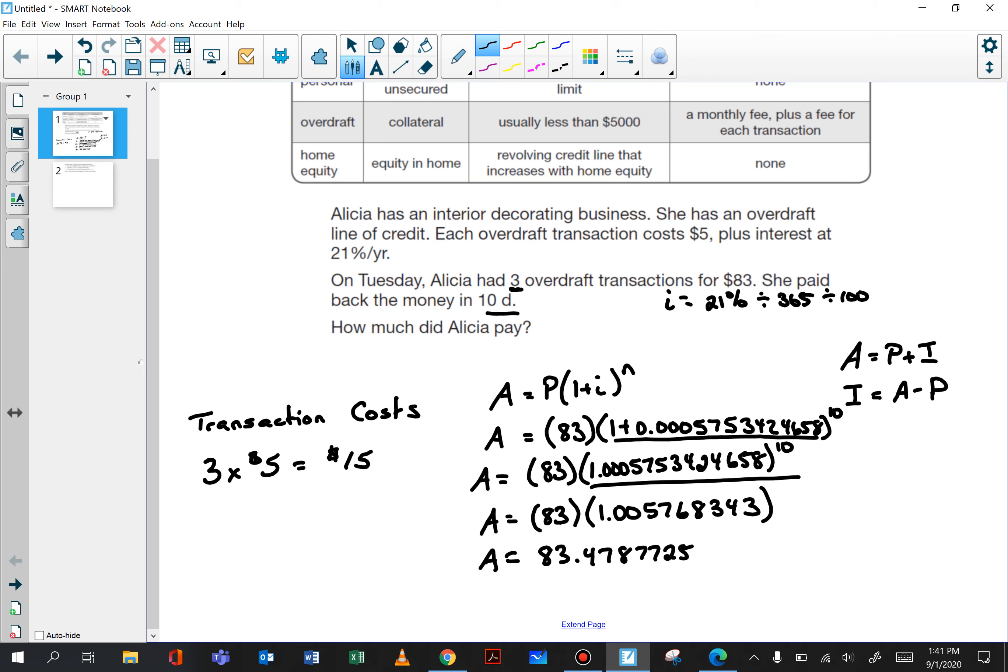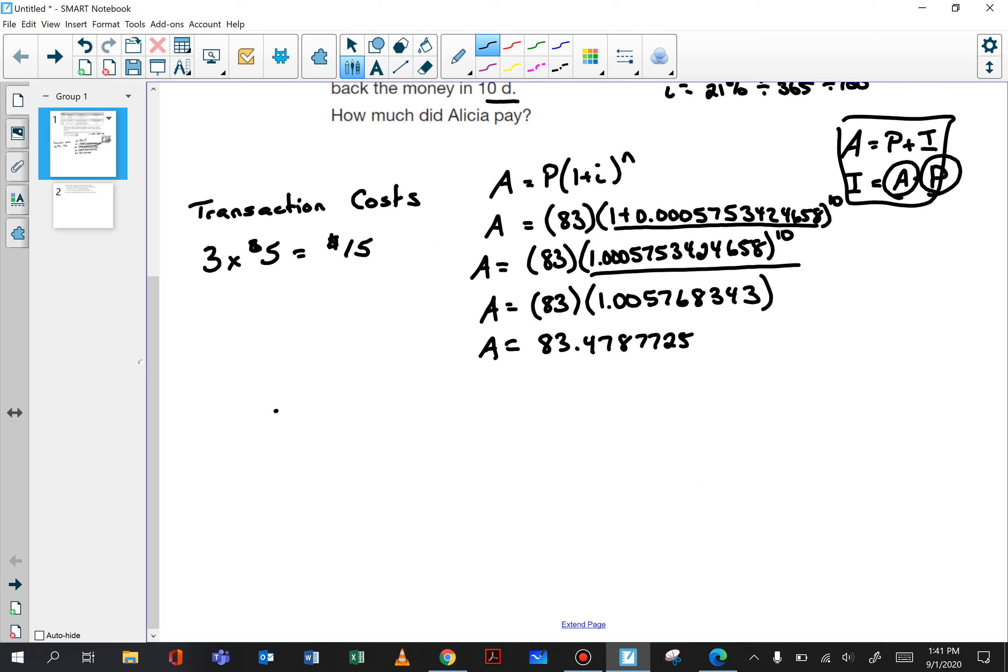To calculate I, we're using this formula here. A we have just calculated, we have to subtract the principle. So I equals A minus P. I equals 83.47877725 minus 83. I equals 0.47877725.